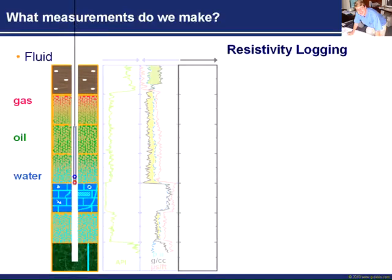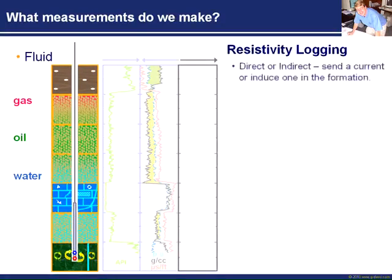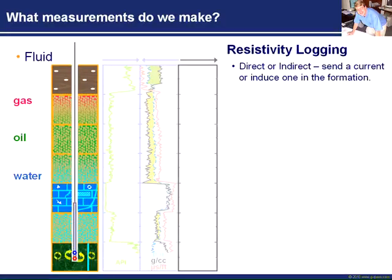We place our tool again into the wellbore, and we have a transmitter and a receiver. In general we have two types of resistivity measurements. There's what I'll call a direct measurement, where you beam an electric current directly into the formation. You have a conductive connectivity between the tool and the formation, and you measure the resistance of the rock to that electric current.